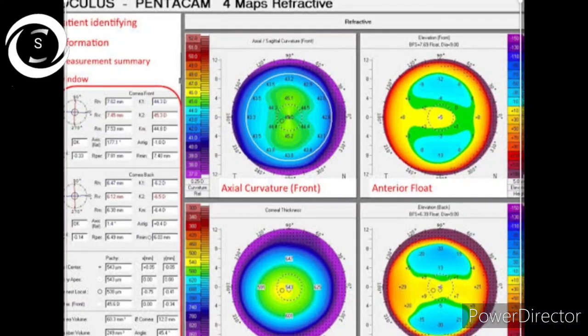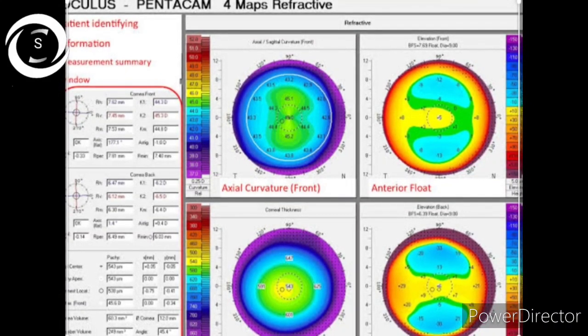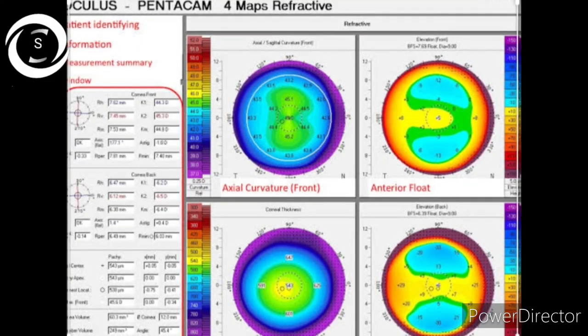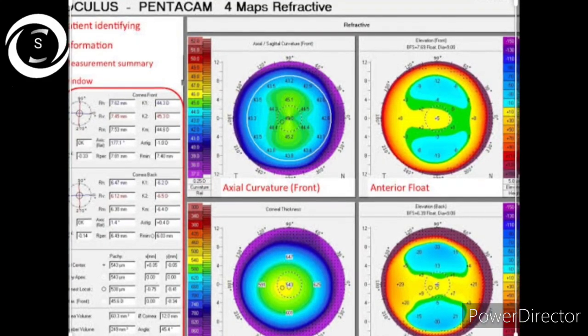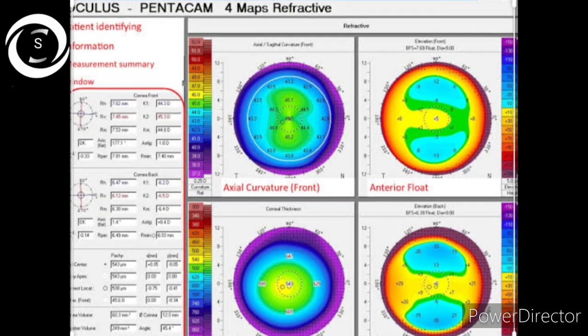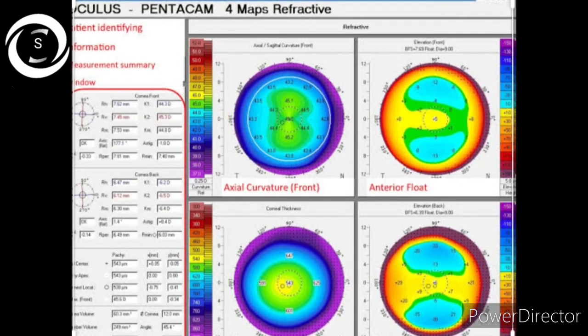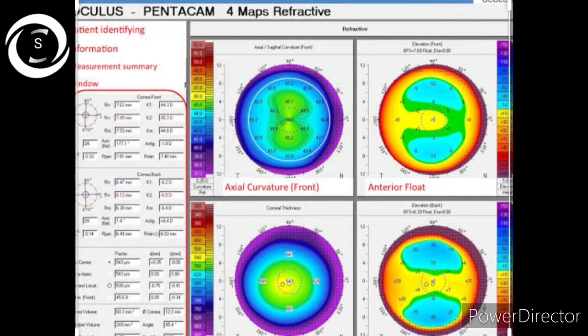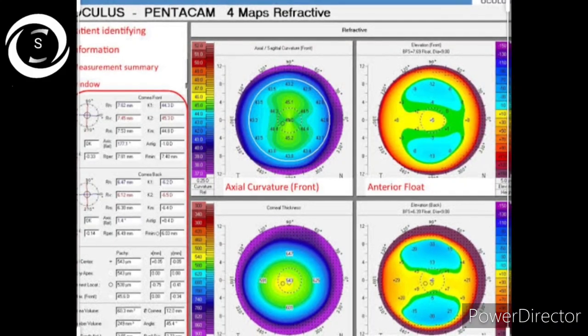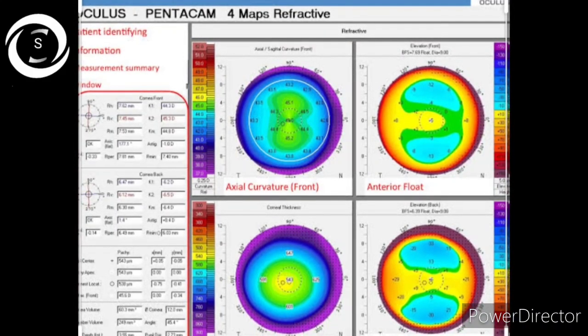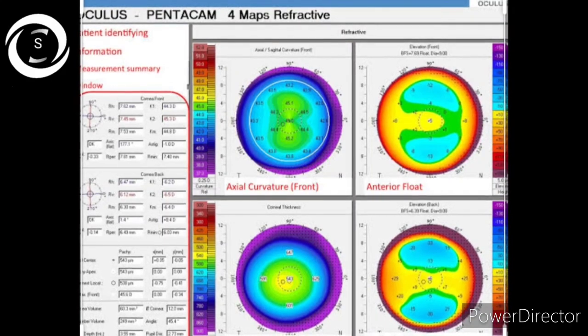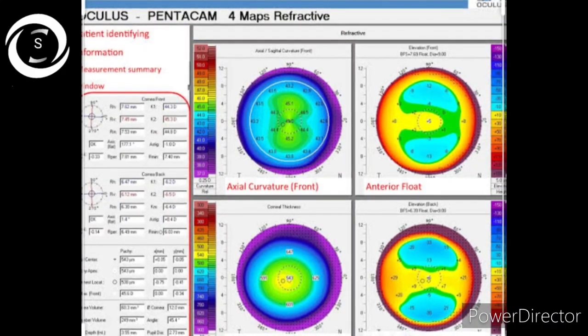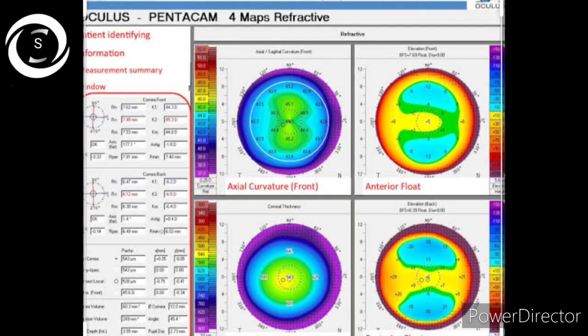Pre-refractive surgery to identify regular astigmatism and corneal thinning, IOL selection especially phakic intraocular lens with anterior chamber depth measurement. Post refractive surgery to see ectesia, to guide suture removal or placement or corneal relaxing incisions, post keratoplasty astigmatism evaluation and management.